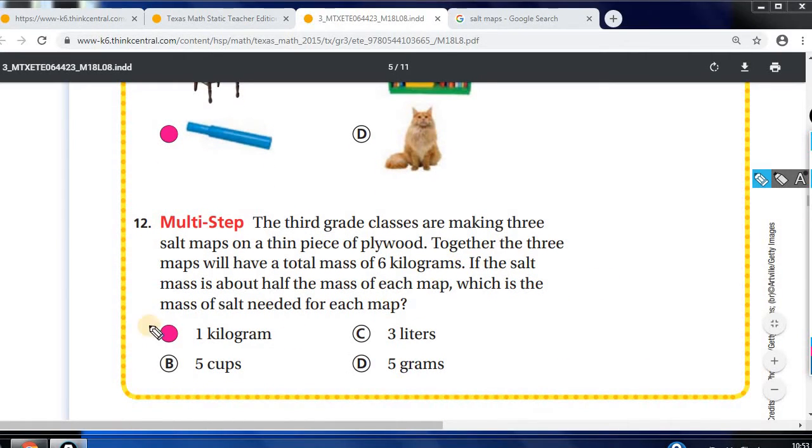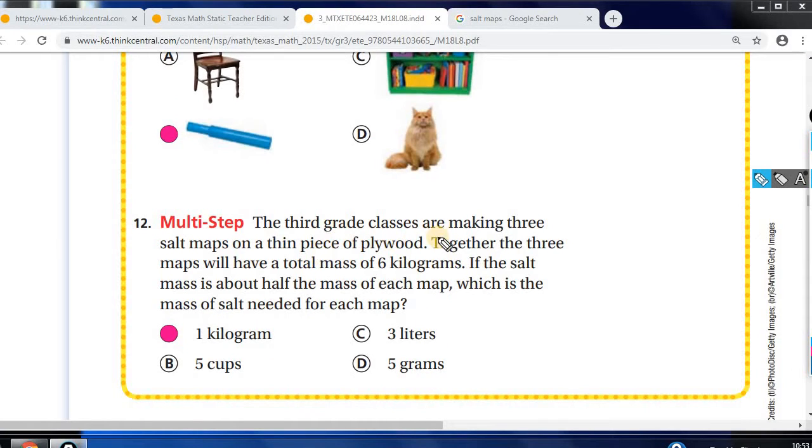We're looking at a multi-step word problem. The third grade classes are making three salt maps on a thin piece of plywood. Together the three maps will have a total mass of six kilograms. So there's three salt maps. Each one, all three together have a total mass of six kilograms. So if we divide six divided by three, it's two. So each one of the salt maps will weigh two kilograms. And if the salt mass is about half the mass of each map, which is the mass of salt needed for each map. So it's half for each map. A half of two is one.